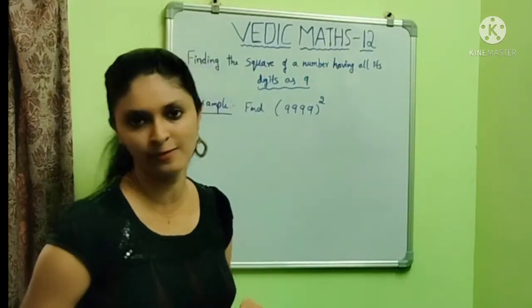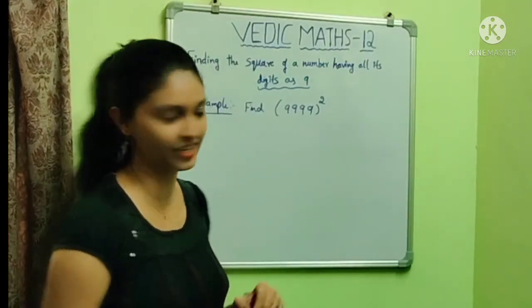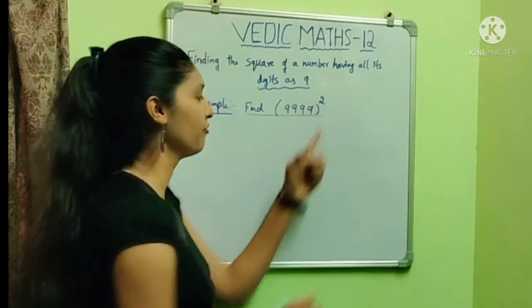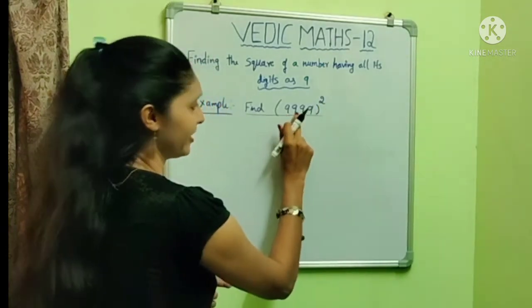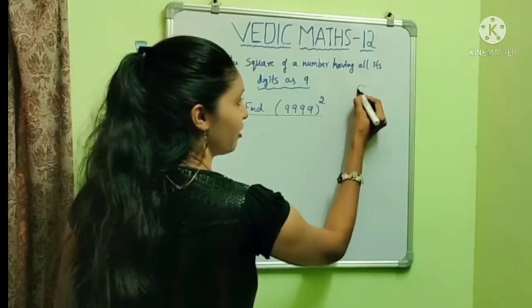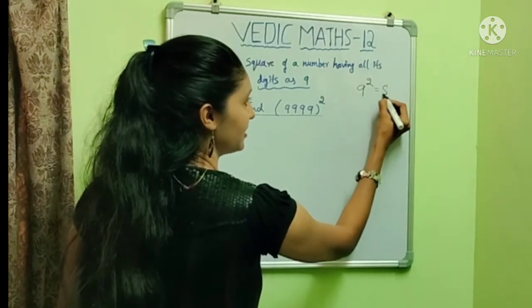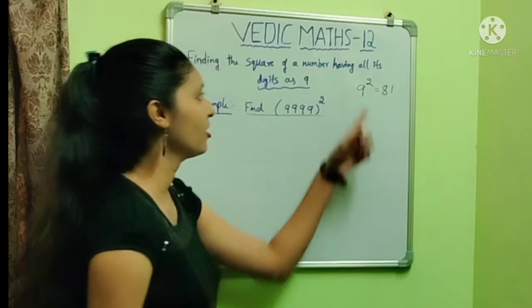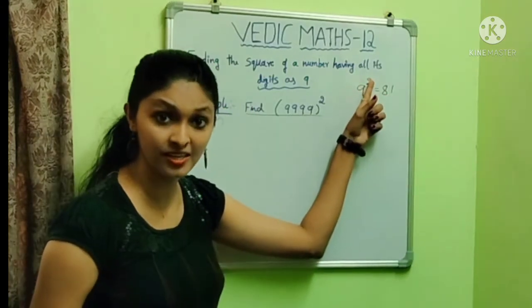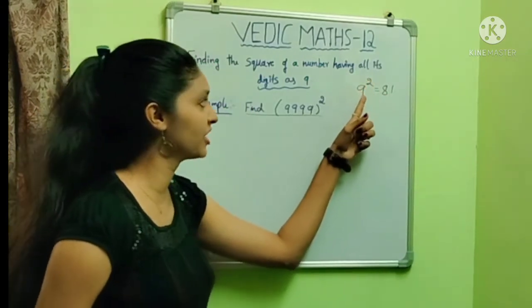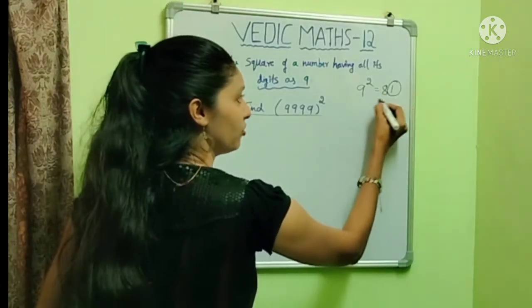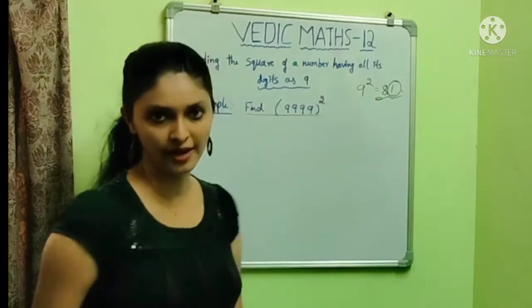Let me take one example and explain the trick. I have taken the example of finding the square of 9999. We all know that the square of 9 is 81, which means all answers for the squares of numbers having only the digit 9 end with 1. We have to keep this point in mind.